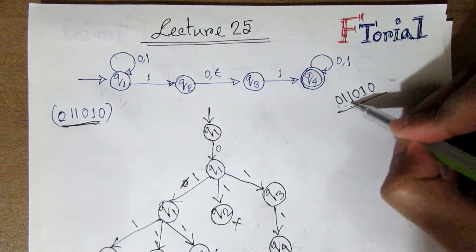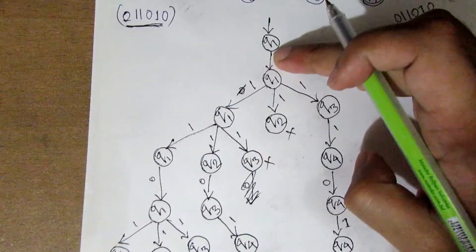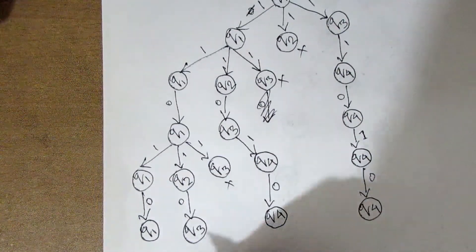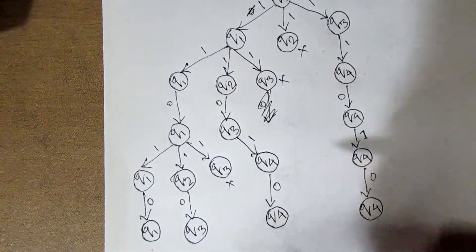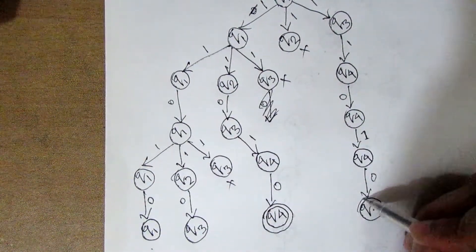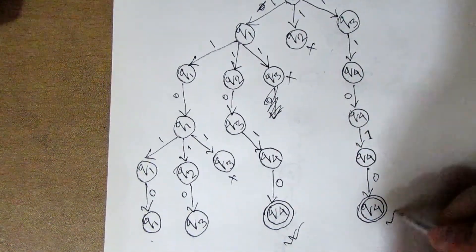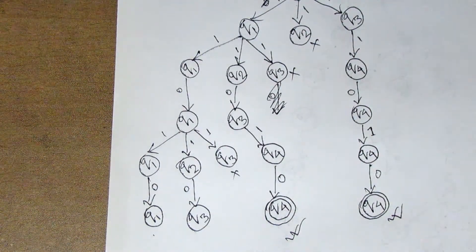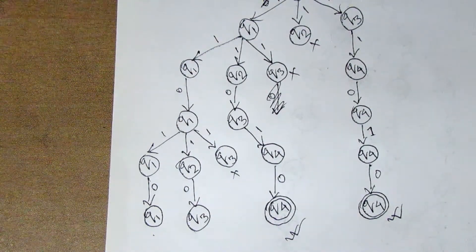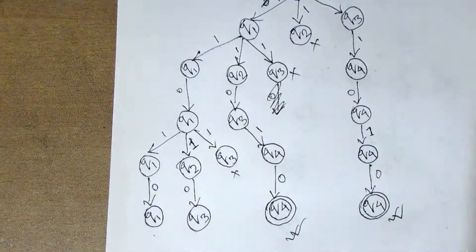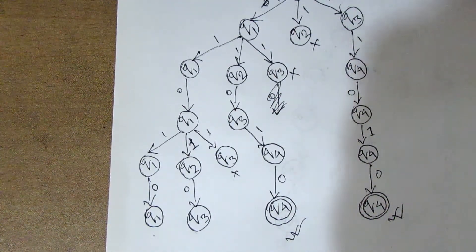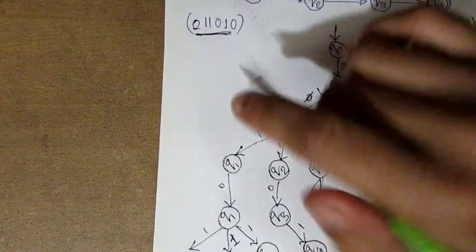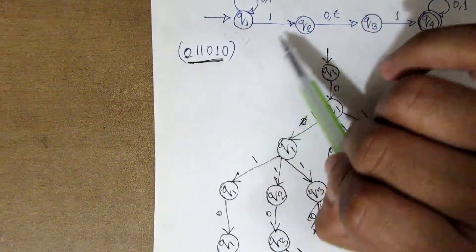Now we can see: Q1 is not a final state, Q3 is not a final state, but Q4 is a final state. So the string 0,1,1,0,1,0 is accepted because we end in Q4, which is a final state.